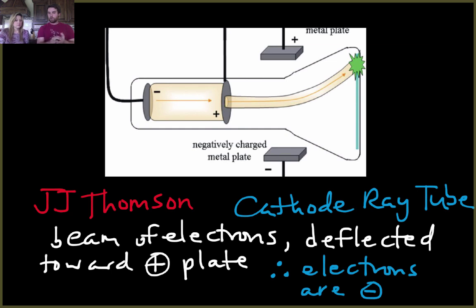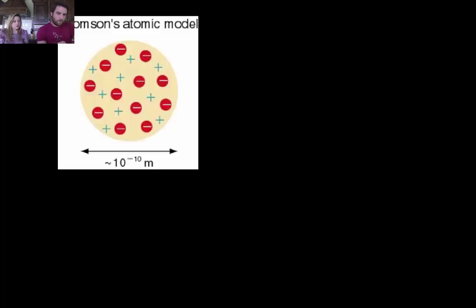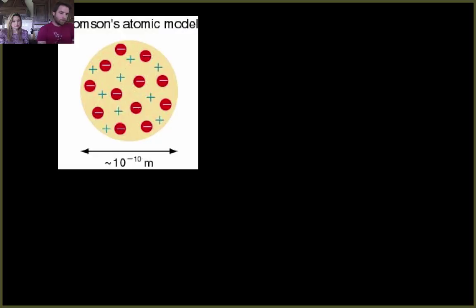You've got to know what the experiment was, who did it, and what it showed. It's only four scientists, not super bad. J.J. Thompson then came up with an atomic model. This is Thompson's atomic model based on his experiment, and he called this the plum pudding model.